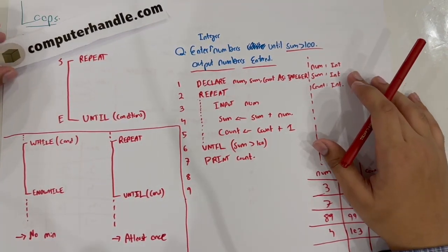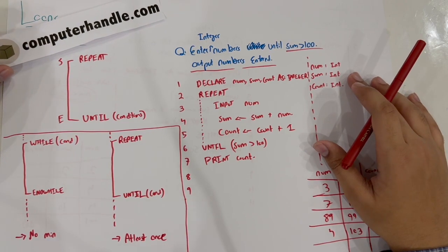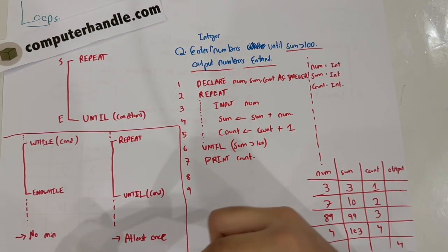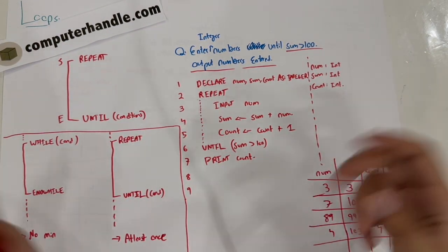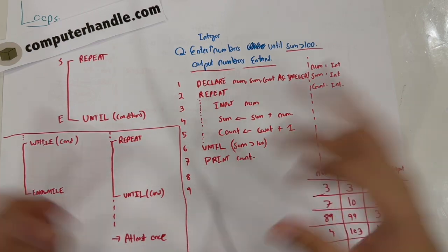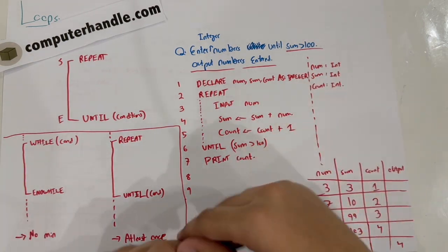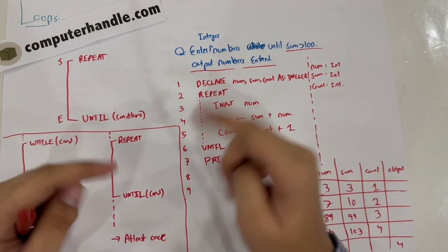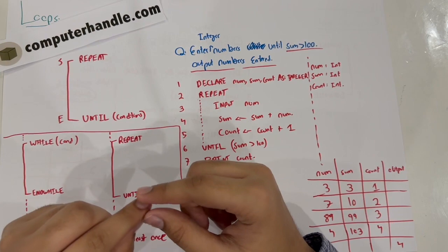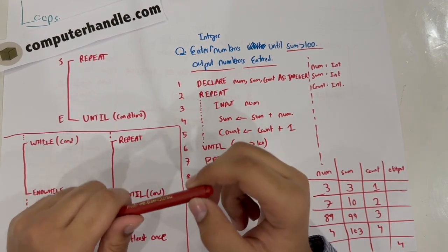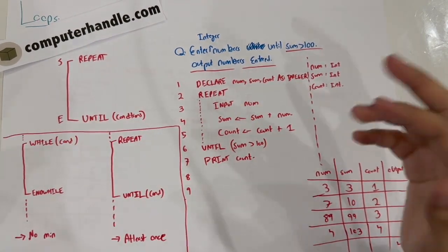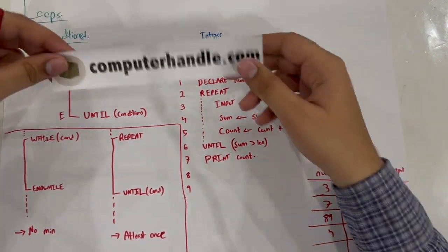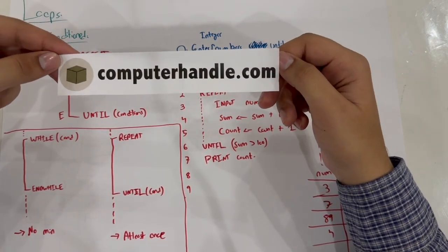In the next lecture we will cover some practice questions, then proceed to extra concepts not discussed in the flowchart chapter. Take care everybody, thank you for viewing this lecture at computerhandle.com — see you soon.